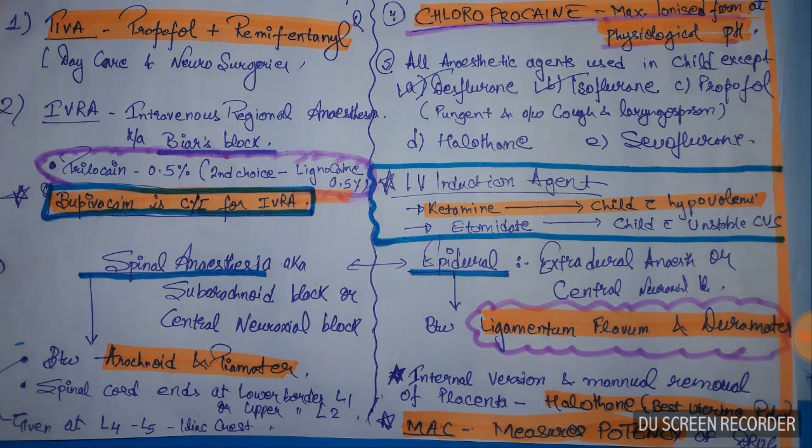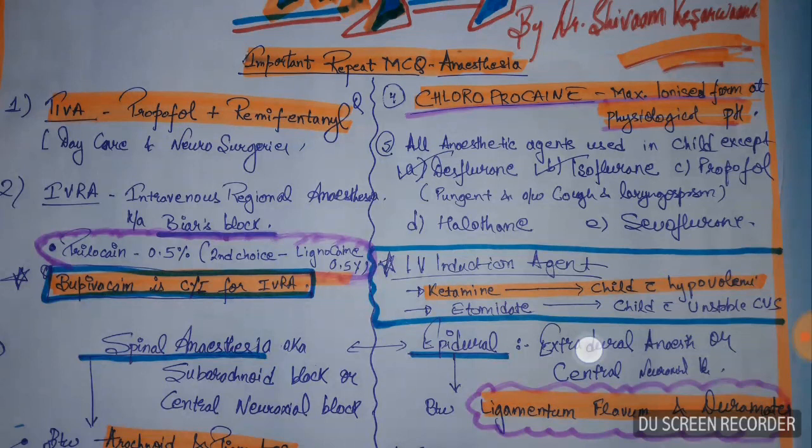Chloroprocaine is the maximum ionized form at physiological pH. These are some important MCQs you need to keep in mind. All anesthetic agents can be used in children except certain ones.